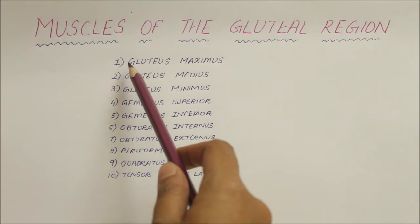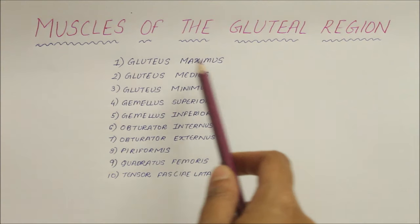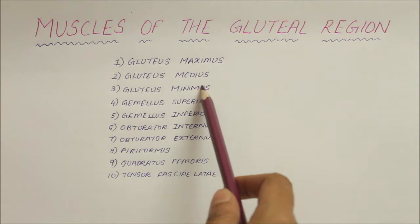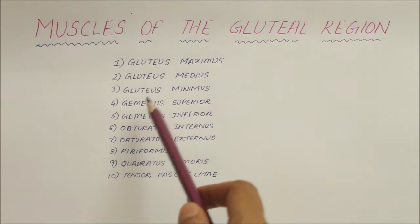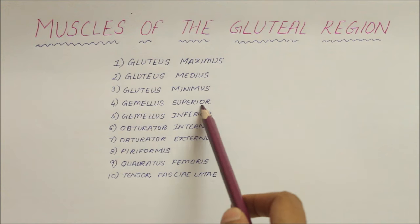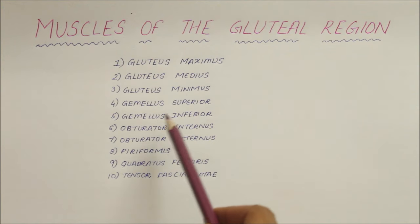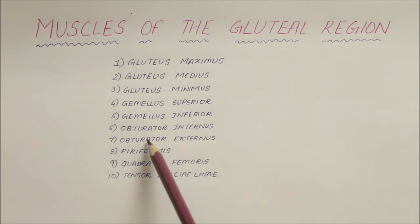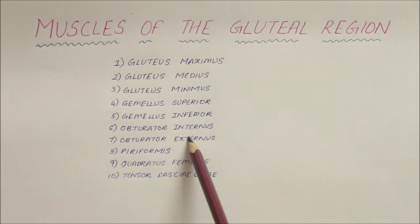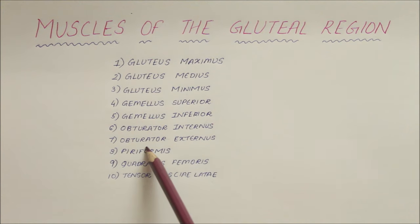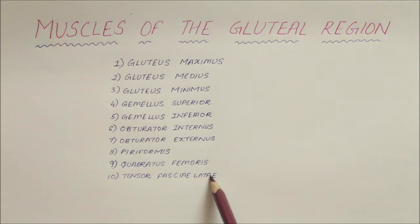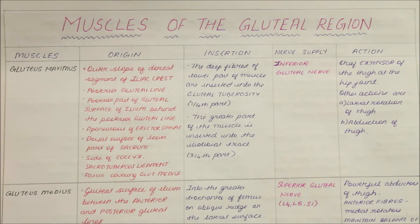In detail, we have gluteus maximus, gluteus medius, gluteus minimus, gemellus superior, gemellus inferior, the obturator internus, obturator externus, piriformis, quadratus femoris, and finally the tensor fasciae latae. Now let's look into these muscles in detail.